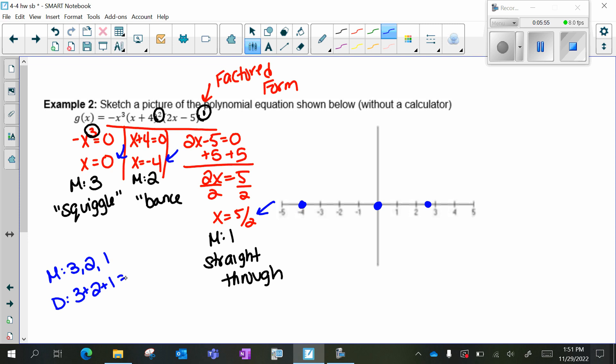Which means it's an even degree, which means my arrows point in the same direction. And I have a negative leading coefficient, so my arrows are both going to point down.